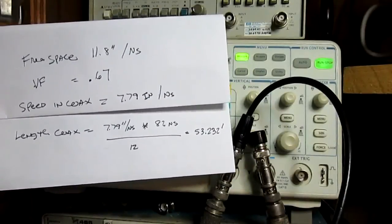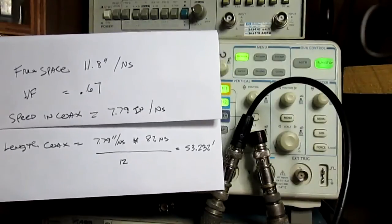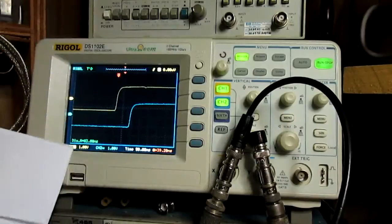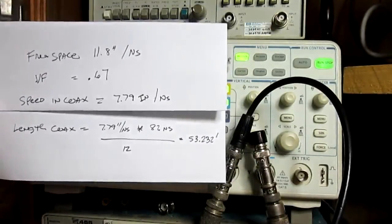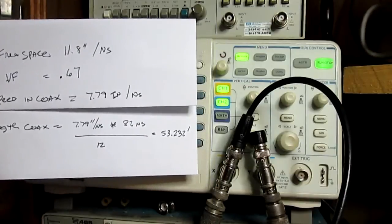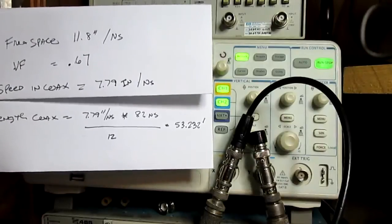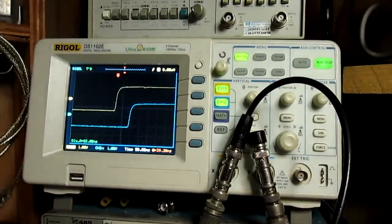So, in that case, the length of the coax would equal 7.79 inches per nanosecond times the number of nanoseconds, which in my case is 82, 83, it's toggling around there. And then, that would give you the number of inches, so then we divide that by 12, and then you would get the number of feet. So, I come up with 53.232 feet, which is pretty close to 53.